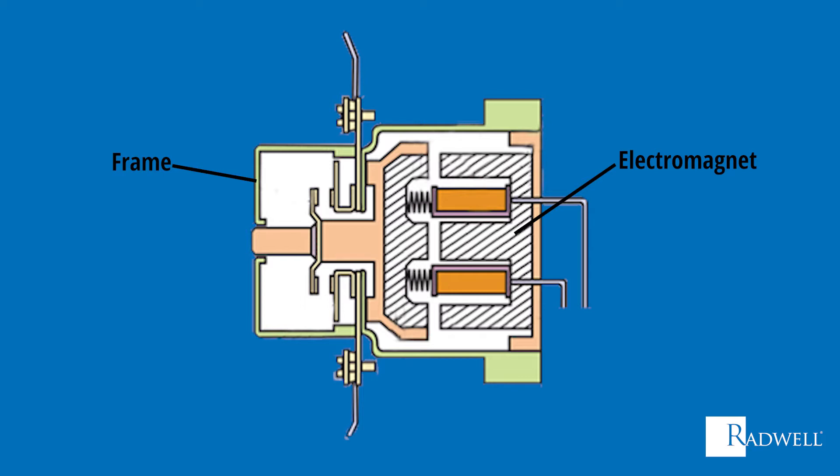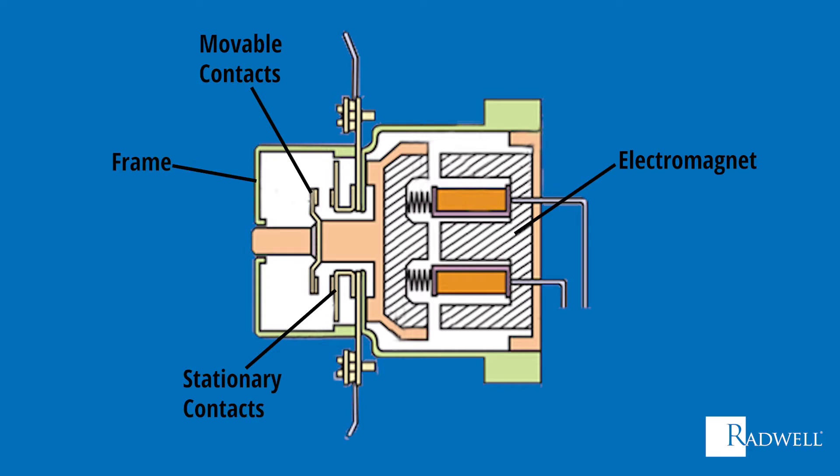The last component is the contacts. There are two sets of contacts in a contactor. One contact is stationary and the other is movable. Contacts are the components that carry the current.